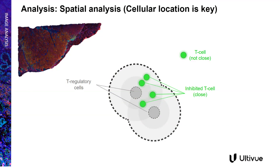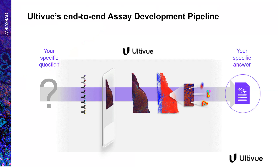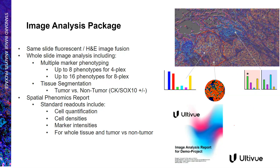Spatial data is key to determining what is occurring in the tissue. Proximity analysis provides insights on how active the immune response is — for example, regulatory T cells shown in gray can regulate T cells shown in green as long as they are in the same vicinity, while T cells not proximal to regulatory cells may be activated and free to kill tumor cells. Our current image analysis package includes multiple-marker phenotyping of up to 8 phenotypes for four-plex and 16 for eight-plex, further segmented by tumor versus non-tumor regions, and a spatial phenomics report including cell quantification, cell densities, marker intensities, and tissue region segmentation.